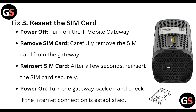Fix 3: Reset the SIM Card. Power off the T-Mobile Gateway, then carefully remove the SIM card from the gateway. After a few seconds, reinsert the SIM card securely. Turn the gateway back on and check if the Internet connection is established.